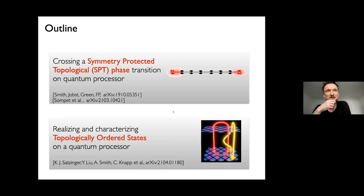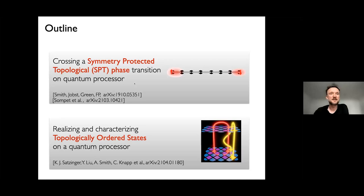I want to talk about two different aspects. In the first part, I want to discuss how we can use quantum computers to study a phase transition from a symmetry-protected topological phase into a trivial phase, and also measure the characterizing invariants — in this case, so-called string order parameters. In the second part, I want to discuss genuinely topologically ordered states and show how we can directly measure entanglement entropies and also properties of their quasi-particle excitations.